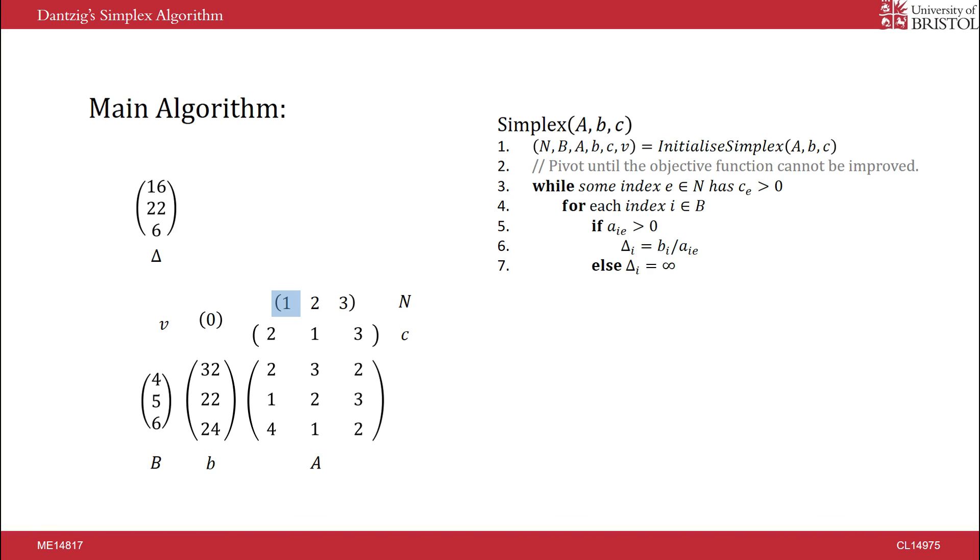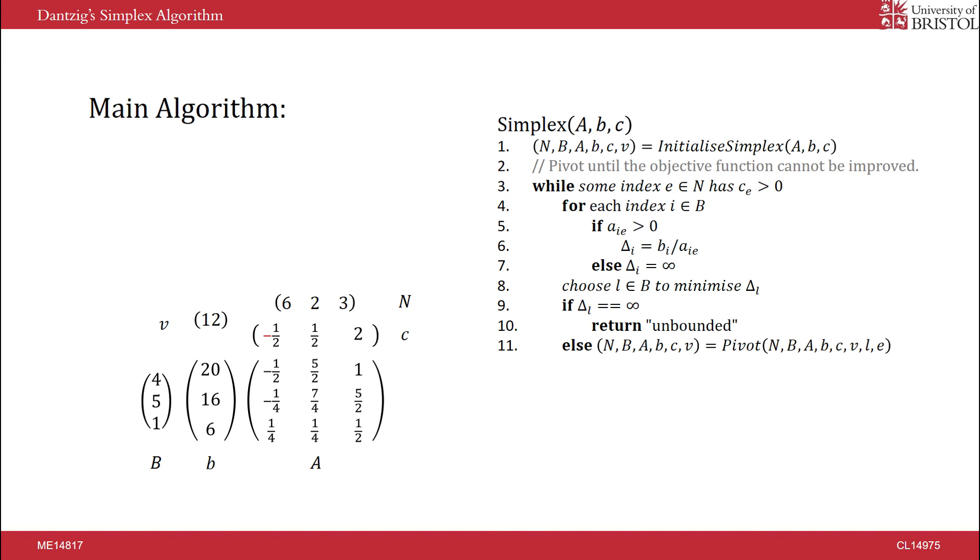Lines 4 to 7 calculate the bounds that each constraint places on the variable with the positive coefficient. If the variable has a coefficient of 0 in a constraint, then it is unbounded. If it is unbounded for all constraints, then there does not exist an optimal solution, as the objective function can be increased indefinitely. Then we pivot around the basic variable and the non-basic variable.